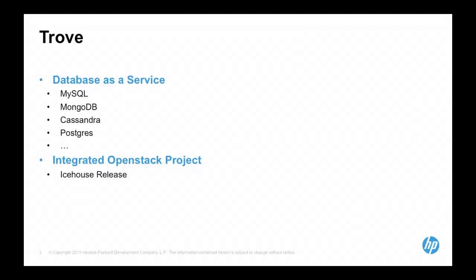Trove is a database service. Today we have support for MySQL, MongoDB, Postgres, and Cassandra. These are all single-instance databases today. We're adding replication and clustering support in Juno, so we're going to be able to do things where the actual database instances themselves have some level of HA. We are an integrated OpenStack project. Our first integrated release was in Icehouse.